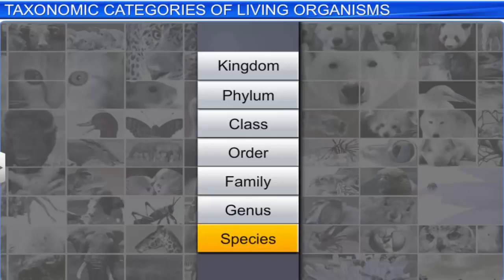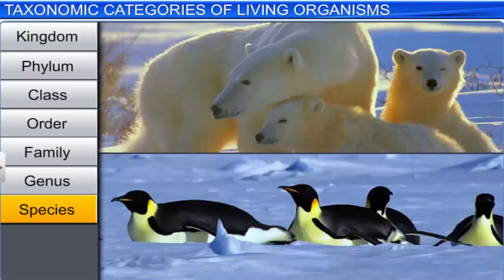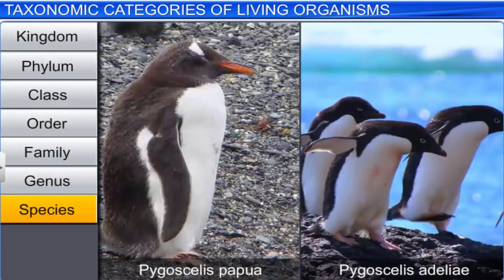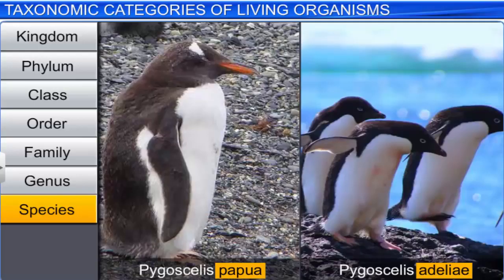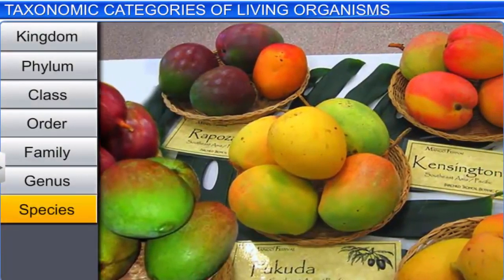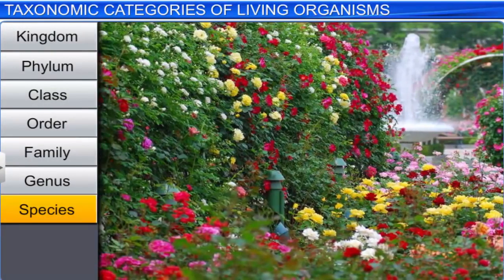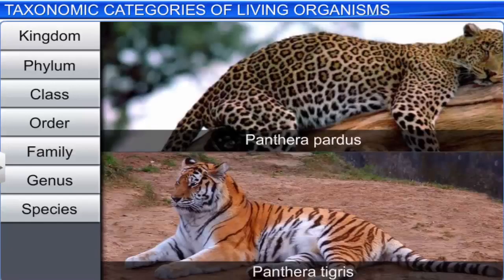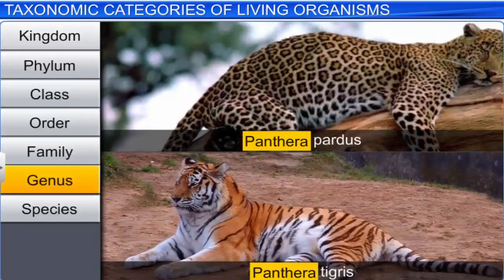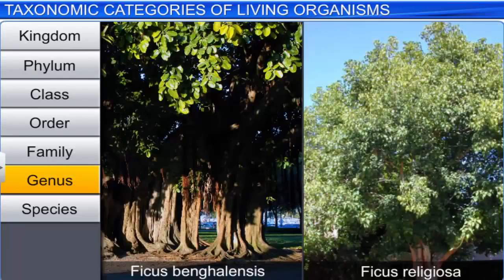Species is the basic rank in a taxonomic category. It is a group of individual organisms with fundamental similarities. You can distinguish one species from another closely related species based on morphological characters. Think of the varieties of mangoes available in the market, or the different species of rose in the garden. The next rank is genus, which consists of a group of related species that exhibit similar characteristics in comparison to species of other genera. In case of plants, the banyan and people trees have certain similarities and therefore belong to the genus Ficus.